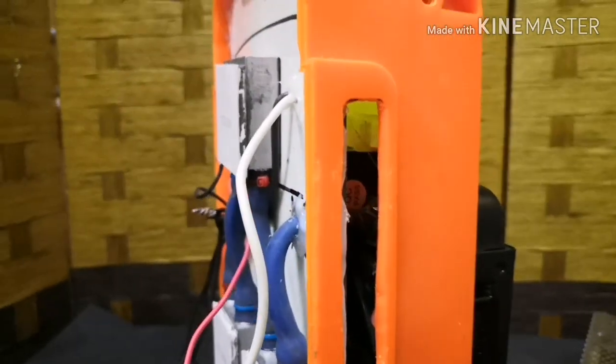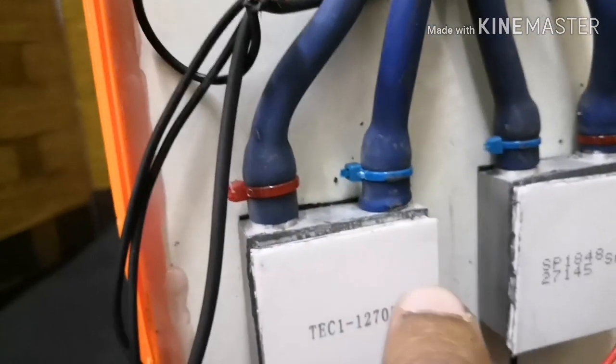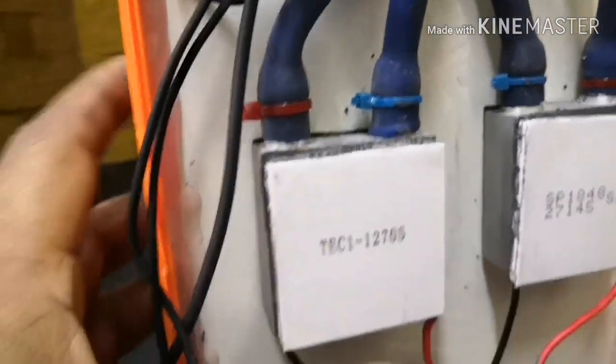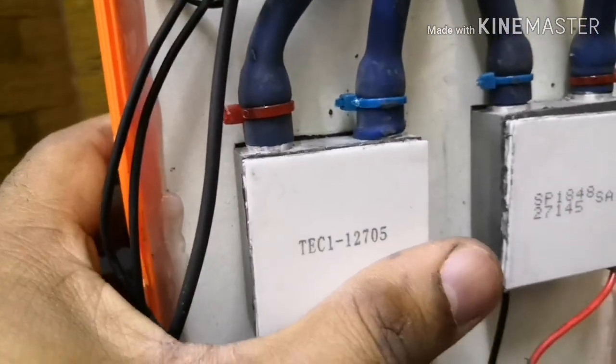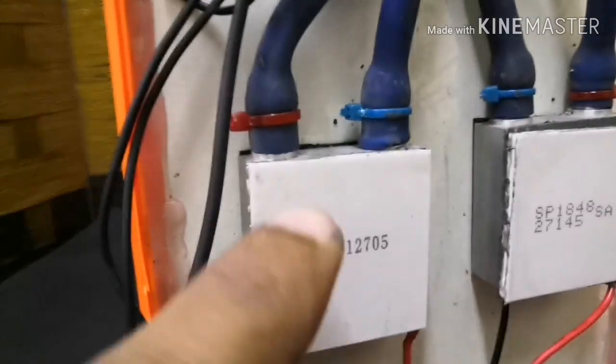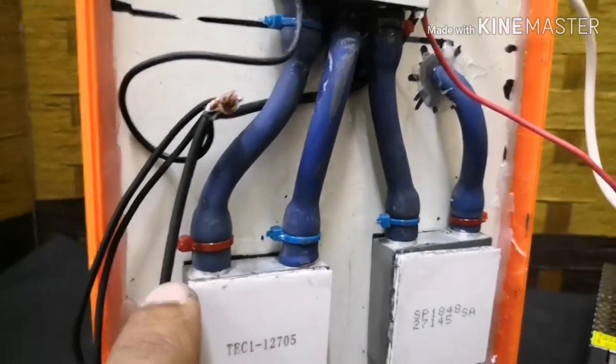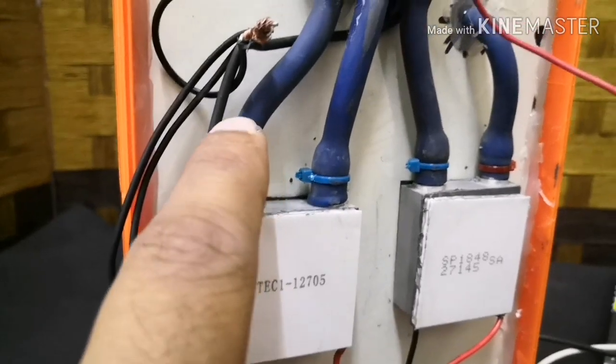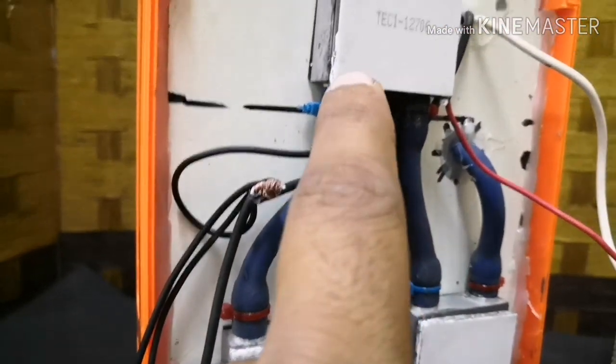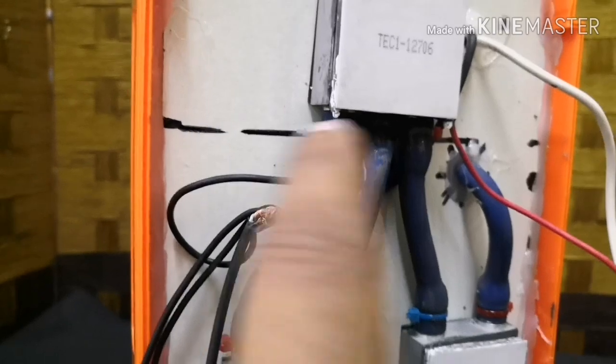The water comes from here and goes into this cooling block, which is 40 by 40mm. After that it returns back. You can see marked with blue, the cool water, the normal temperature water comes here, draws the heat of this Peltier and goes back to the other one.